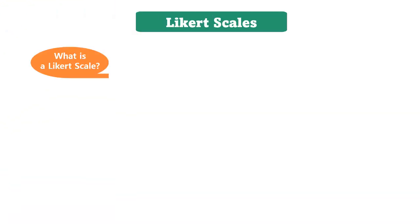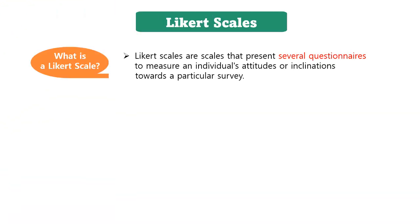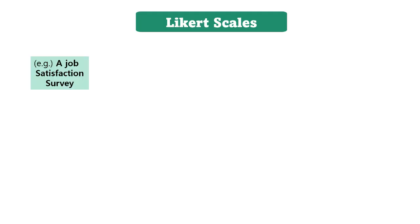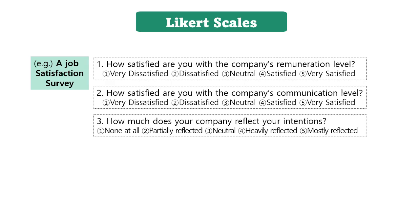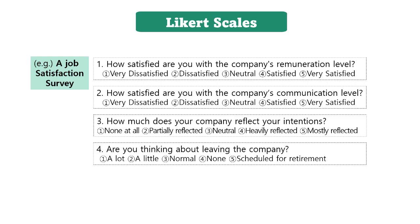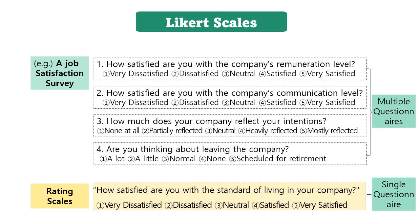Likert scales are scales that present several questionnaires to measure an individual's attitudes or inclinations towards a particular survey. For example, in a job satisfaction survey, creating several questionnaires about salary level, communication, degree of opinion reflection, and job contemplation allows us to accurately measure the respondents' actual satisfaction with their work life. A Likert scale consisting of multiple questionnaires can measure much more accurately than a single questionnaire in the rating scale.